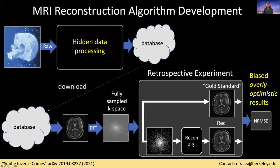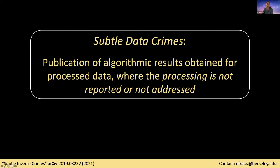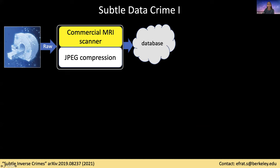The aim of this research is to highlight this phenomenon. Because people are not aware of it, such optimistic results are sometimes published without accounting for the pre-processing, leading to confusion in our field. To raise awareness, we coined the term 'subtle data crimes,' which refers to the publication of algorithmic results obtained for pre-processed data where the pre-processing is not reported or addressed. We also use the term 'off-label usage,' meaning taking data published for one task and using it for a different task.